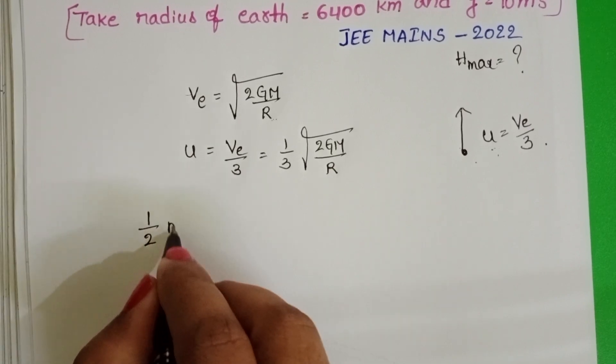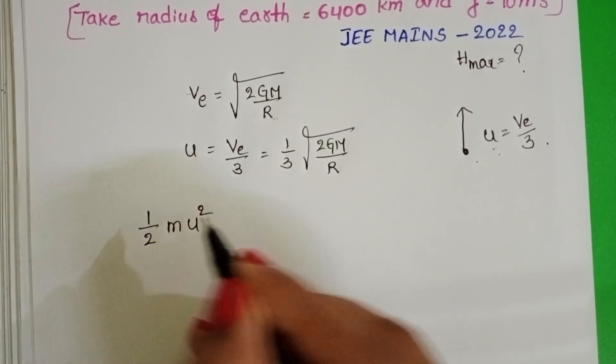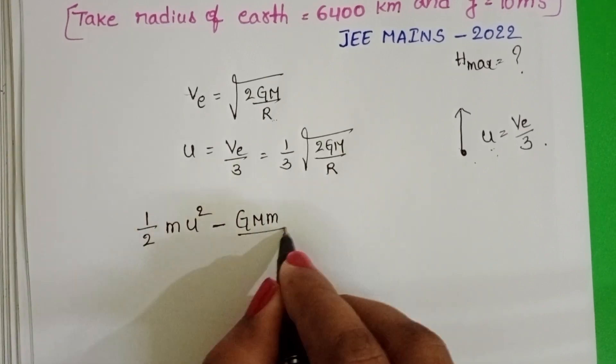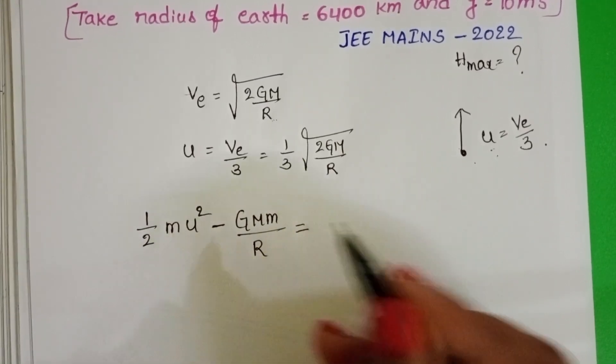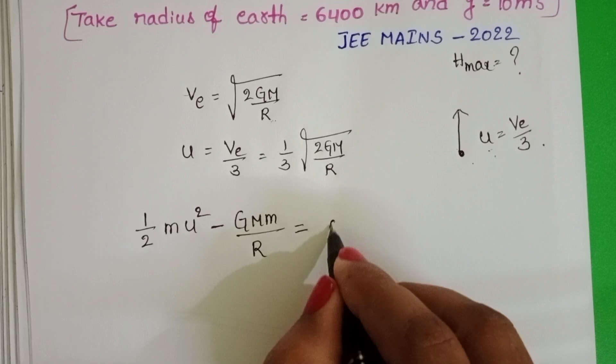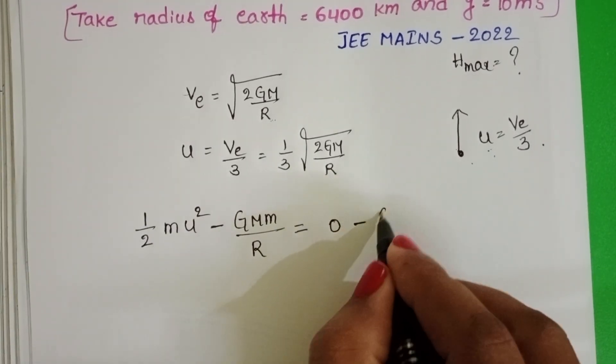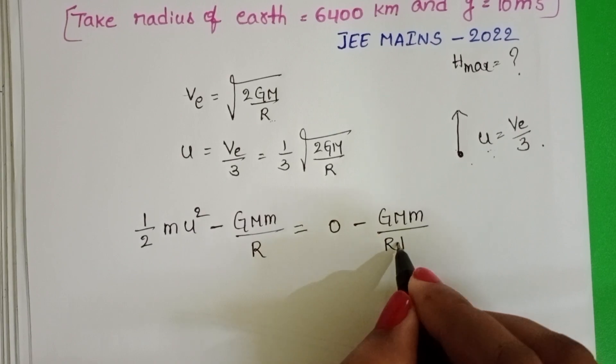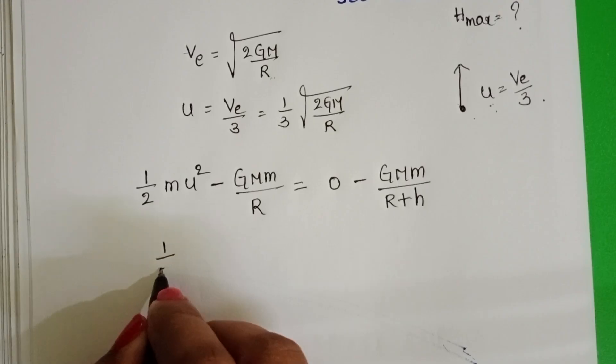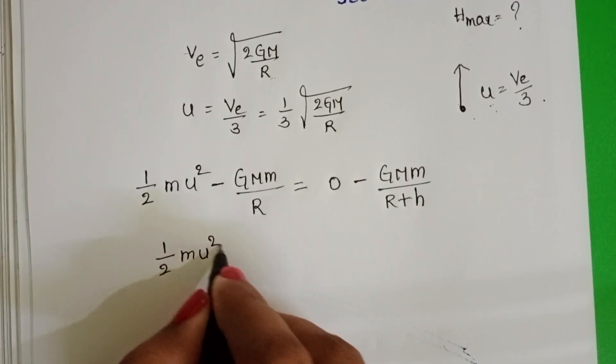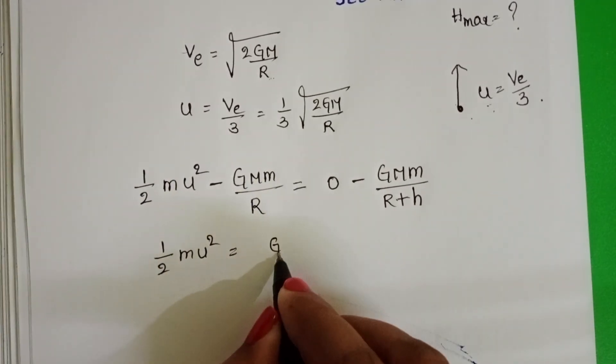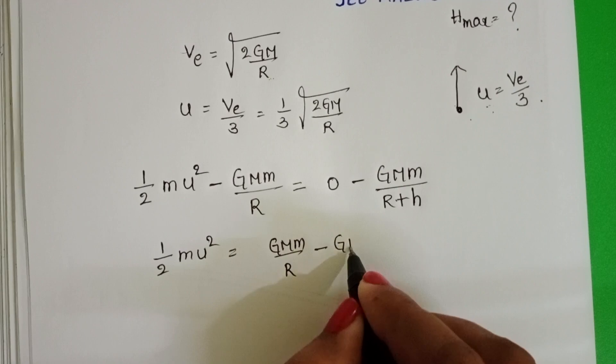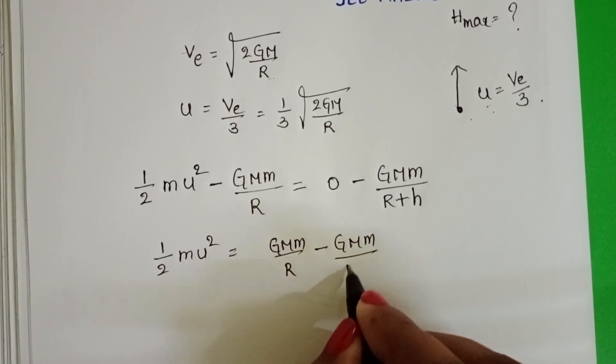Kinetic energy: half m u square and potential energy: minus GMm by R. When it reaches to the maximum height, kinetic energy is 0 and potential energy is minus GMm by R plus h. Here half m u square equals GMm by R minus GMm by R plus h.